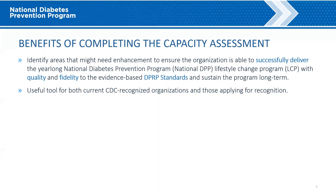Sustainable Lifestyle Change Programs are those that have the capacity to implement the National DPP Lifestyle Change Program over time without federal, state, or local government or other non-governmental grant dollars. Completion of the Organizational Capacity Assessment is required for organizations participating as subsidiaries in umbrella arrangements.